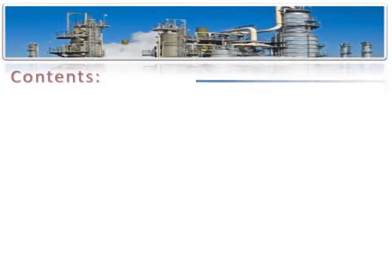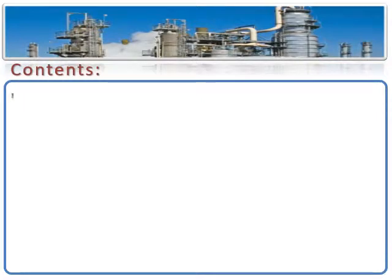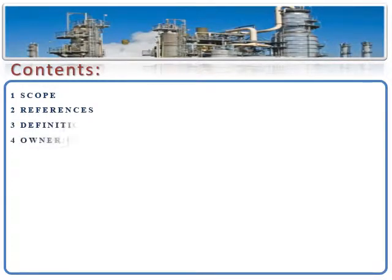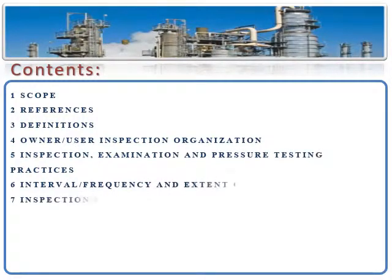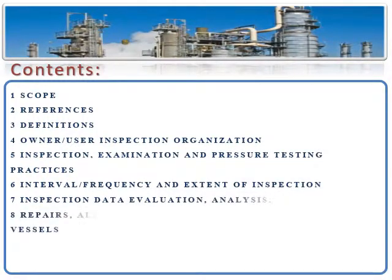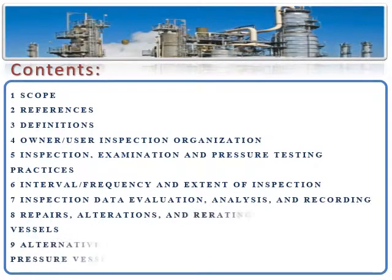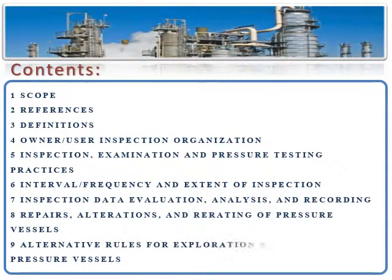It is very important to start by figuring out the contents of this standard. This API standard consists of 9 sections and 5 appendices. These contents are represented as: Scope, References, Definitions, Responsibilities, Inspection, Intervals and Extent, Analysis and Recording, Repair and Alteration, etc.